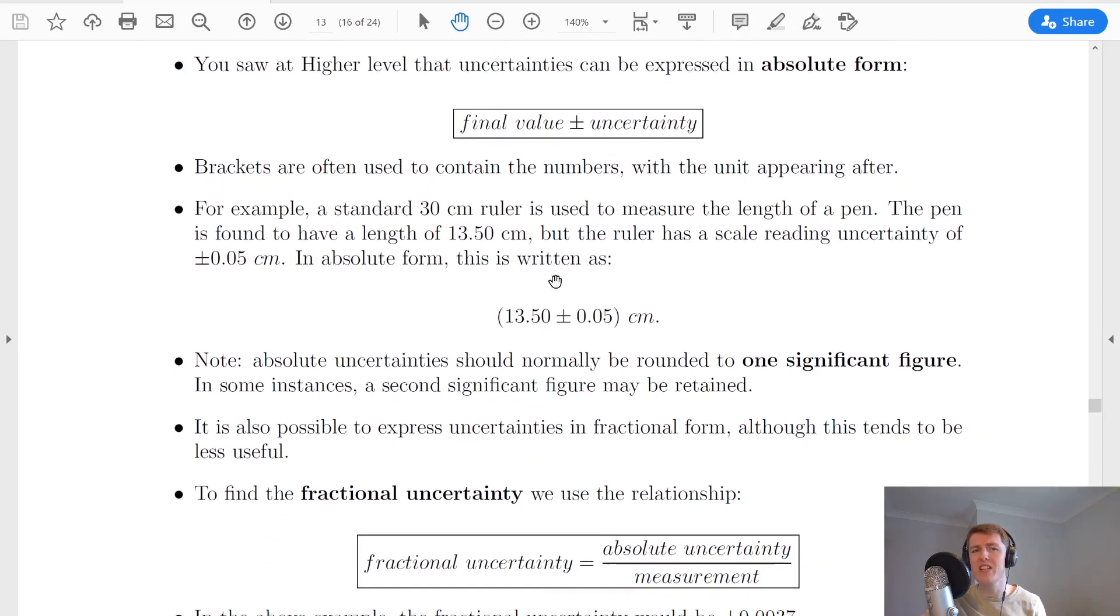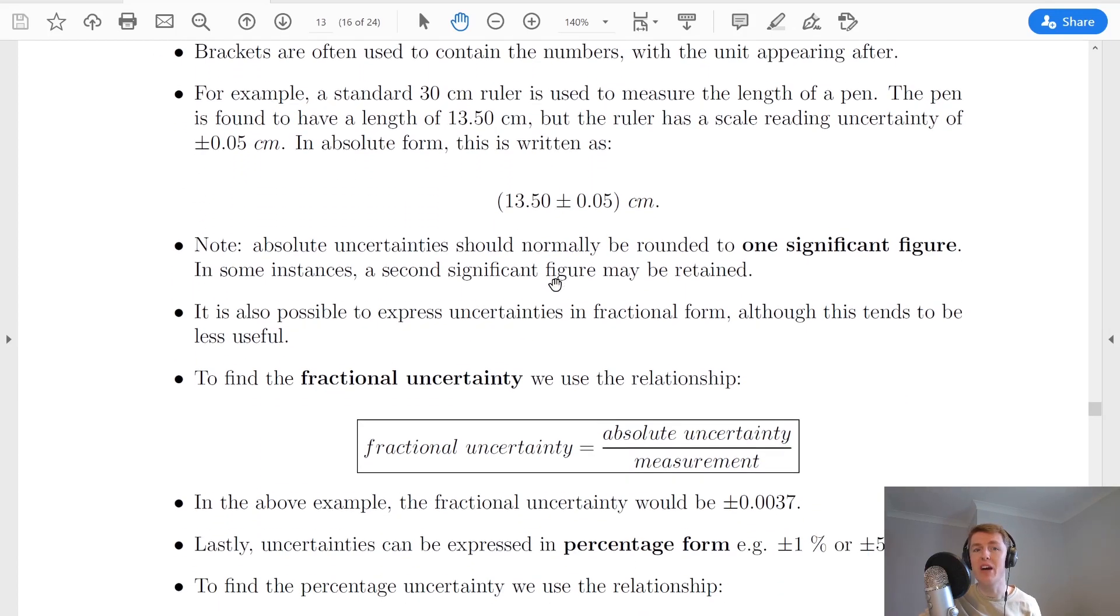Let's look at an example that was in the higher notes as well. Say I take a standard 30 centimeter ruler and measure the length of a pen. The pen is found to have a length of 13.50 centimeters but the ruler has a scale reading uncertainty of ±0.05 centimeters. In absolute form we could write this as (13.50 ± 0.05) cm, with centimeters appearing after it.